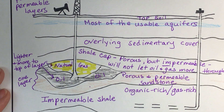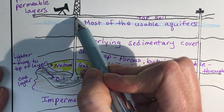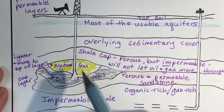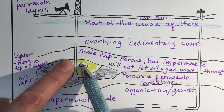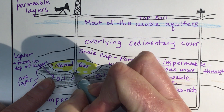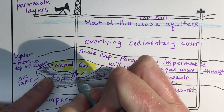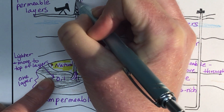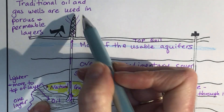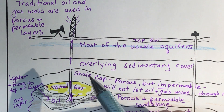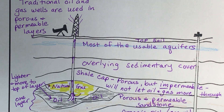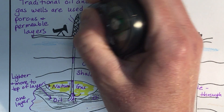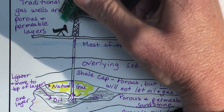Traditionally, when we drill down through the rocks and hit natural gas and oil, the pressure is released. All of this pressure has been building up under the rock, and when it's released the natural gas and oil come up through the well and out. In old movies you'd see oil spurting out until they cap it — but we know how to prevent that now.